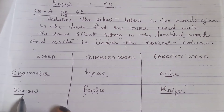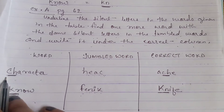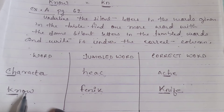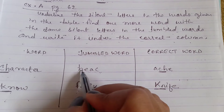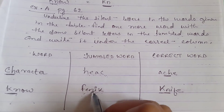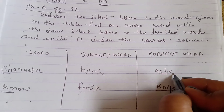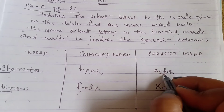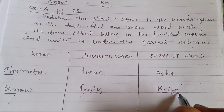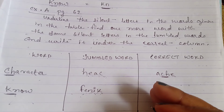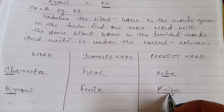The first word is 'character' and the second is 'know'. We underline the silent letters: C-H in 'character' and K-N in 'know'. From the jumbled words, H-E-A-C unscrambles to 'ache' — A-C-H-E — where C-H is silent. And F-E-N-I-K unscrambles to 'knife' — K-N-I-F-E — where K-N is silent.